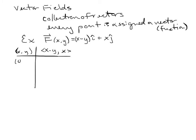Let's pick the point (0, 1). At the point (0, 1), I plug in to get a vector of (-1, 0). So if I were to graph this vector field from the point (0, 1), from that point there's going to be a vector pointing negative 1 in the x-direction and 0 in the y-direction.